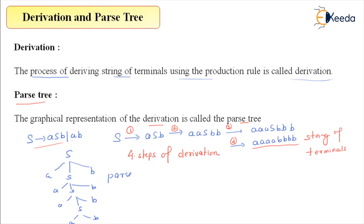This is the parse tree, and this is the derivation. These are very important parts when you understand context-free grammar, because ultimately context-free grammar will be used for deriving sentences, and for that we need this derivation part. That's all for this — thank you.